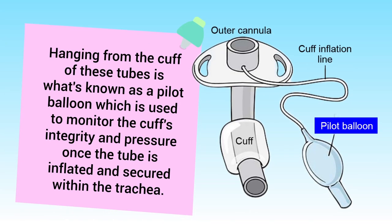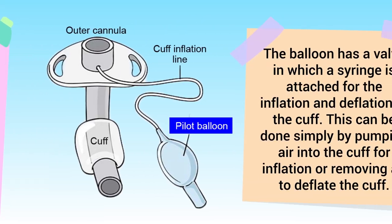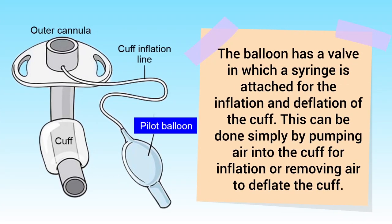Both types are similar yet unique and they each have different parts. Hanging from the cuff of these tubes is what's known as a pilot balloon, which is used to monitor the cuff's integrity and pressure. Once the tube is inflated and secured within the trachea, the balloon has a valve in which a syringe is attached for the inflation and deflation of the cuff.